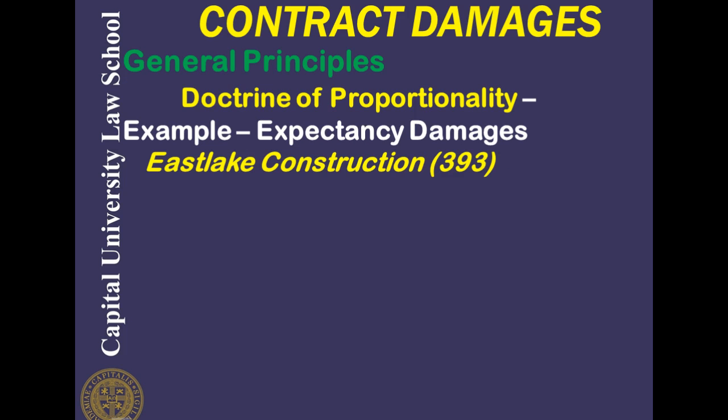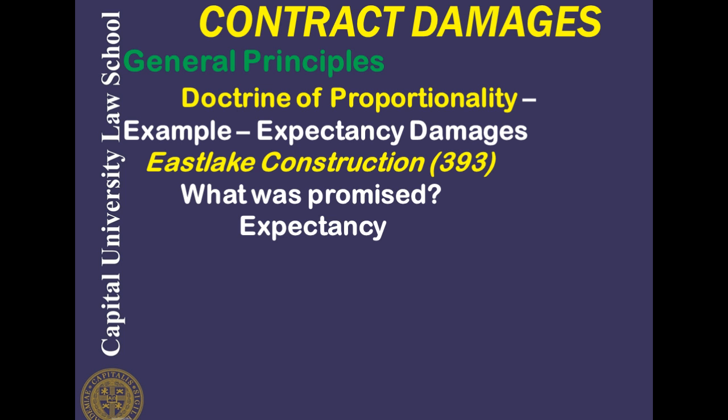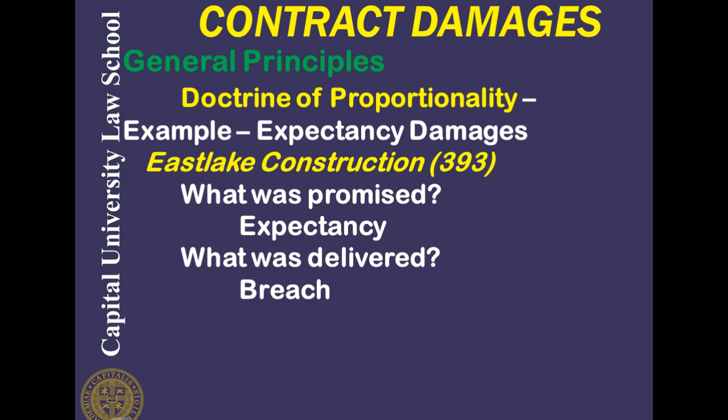Let's look at the doctrine of proportionality in the context of expectancy damages, using the Eastlake Construction case at page I-393. What was promised was a five-unit condominium built to specifications — that was the expectancy. The defendants countersued as the prevailing parties. What was delivered was not what was expected; that was the breach. Eastlake failed to do a number of things they had contracted for in building the condominium.